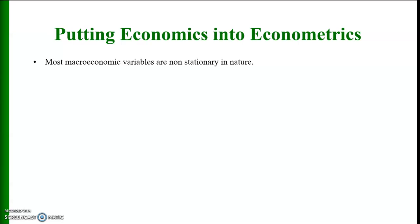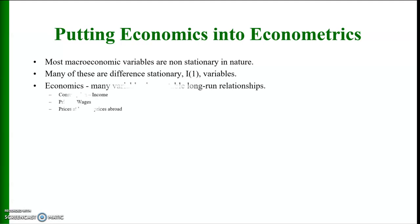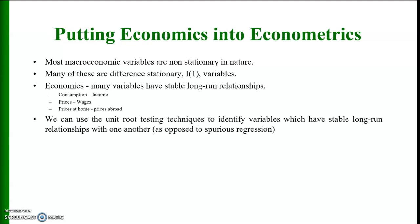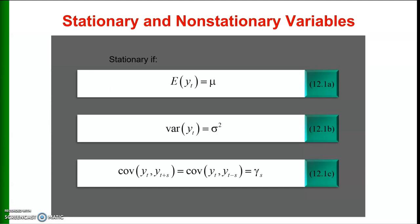If you are students of economics, you might have experienced that most macroeconomic variables are non-stationary in nature. Many of these series can be stationarized by taking the first difference or the second difference, but the literature shows that the majority of non-stationary series may become stationary by taking the first difference. In economics, most variables have stable long-run relationships — for example, consumption and income, prices and wages, and prices at home versus prices in other countries.